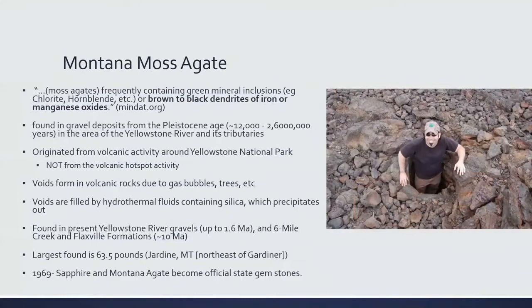Moss agates frequently contain green mineral inclusions or brown to black dendrites of iron or manganese oxides — it's these brown to black dendrites that give Montana agates their moss characteristics. They can be found in gravel deposits from the Pleistocene, about 12,000 to 2.6 million years ago, in the area of the Yellowstone River and its tributaries. The origin of the volcanic activity for the host rocks is around Yellowstone National Park, though it is not directly related to the Yellowstone hotspot activity.